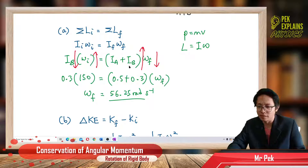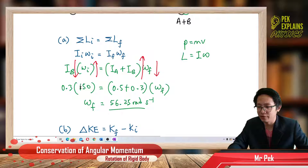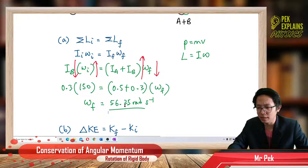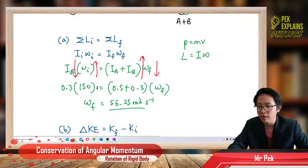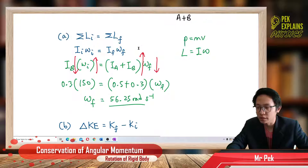That's the final angular velocity. Is it smaller than 150? Yes, it's definitely smaller — only 56.25 radians per second. In one second it only turns 56 radians, whereas before it could turn 150 radians in one second. So it's much slower because it became heavier. That's conservation of angular momentum.